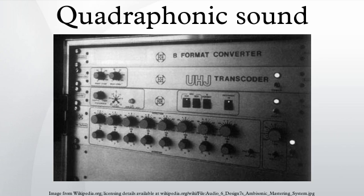Quadraphonic records did not remain restricted to the discrete channel format used in reel-to-reel or eight-track tapes. Quadraphonic vinyl albums appeared using several different and incompatible recording modes. The first of these were basic systems with poor performance, developed by Electro-Voice and Dyneco — a so-called matrix format that utilized four sound channels encoded into two stereo album tracks, then decoded back into the original four sound channels, but with poor decode performance that failed to match the discrete formats.